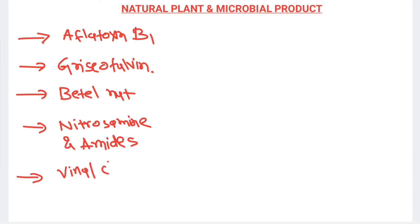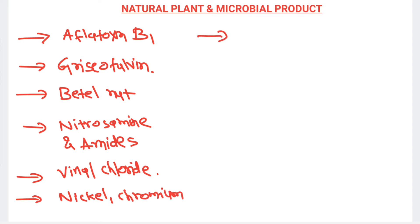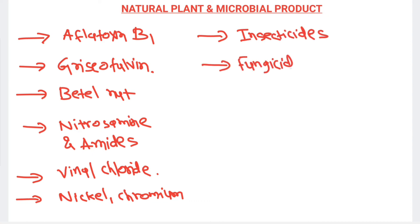Other examples of natural and environmental carcinogens include nickel, chromium, insecticides, fungicides, and asbestos.